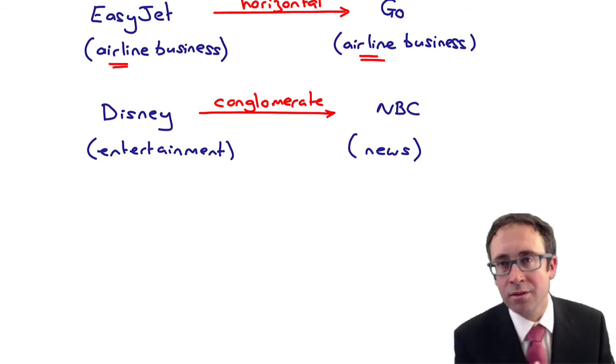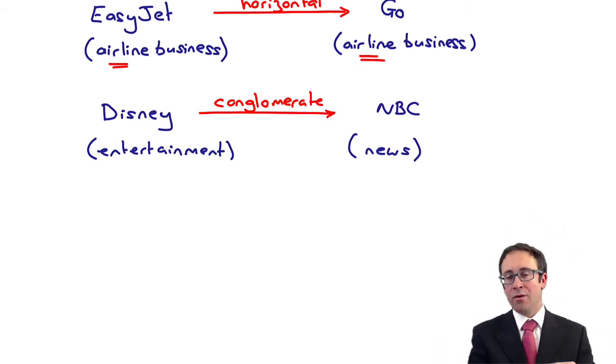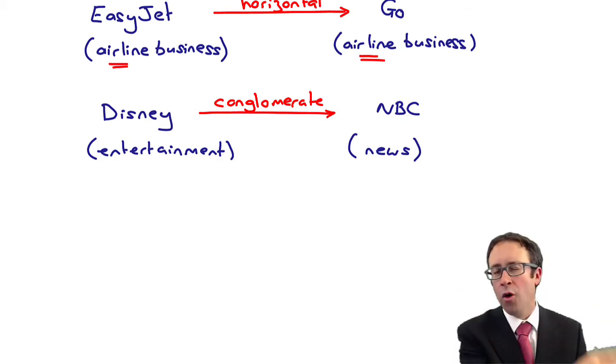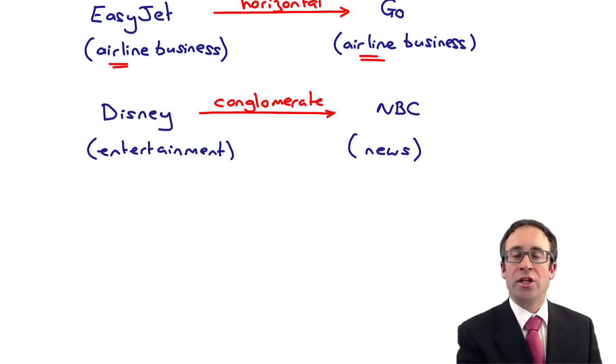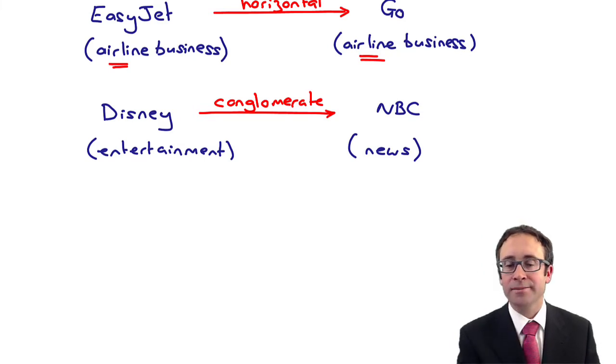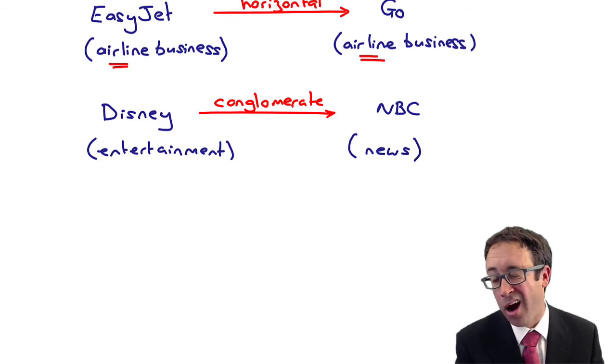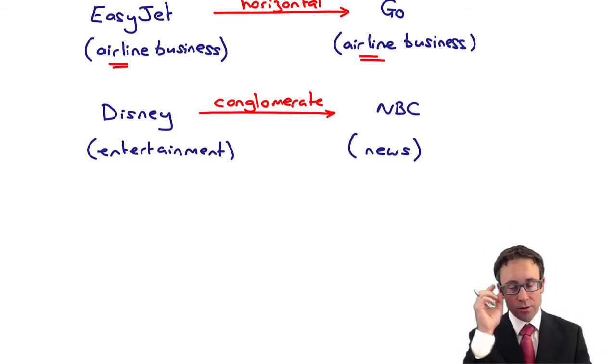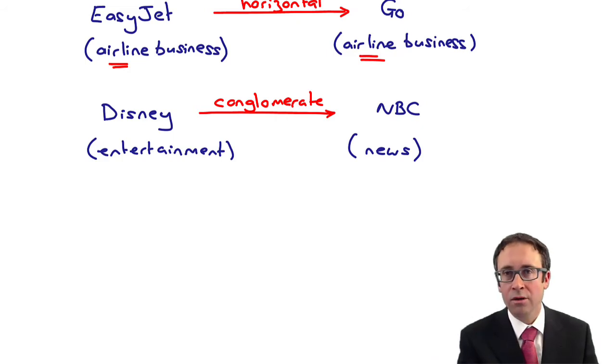What you've got there is referred to as a conglomerate merger or conglomerate acquisition or conglomerate integration. It doesn't necessarily have to be an acquisition, it could be a merger. Before when we mentioned British Airways and Iberia, that's horizontal. We also mentioned Kraft and Cadbury's - again, that's another example of a horizontal acquisition.